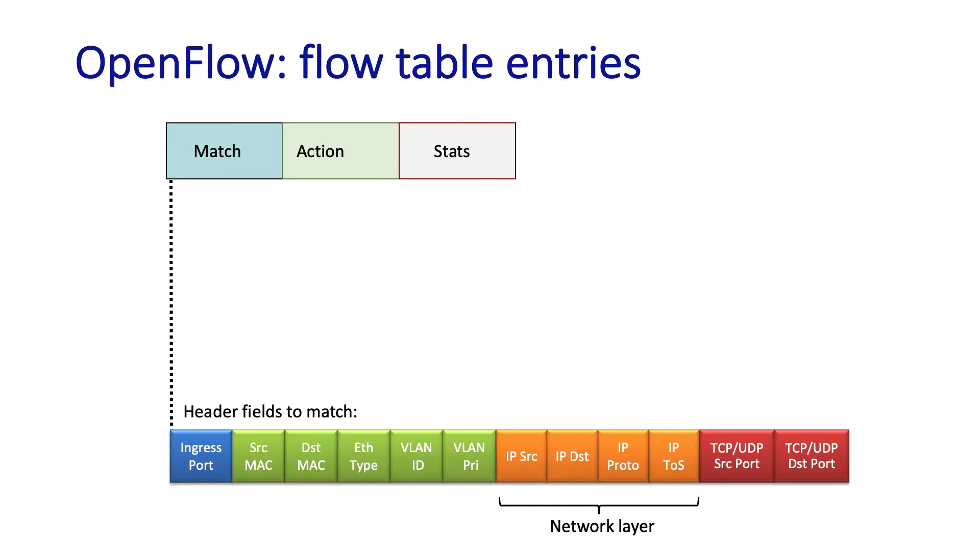In addition to these network layer header fields, one can also match on transport layer port source and destination numbers. So, for instance, one could block or specifically allow services at well-known port numbers. And matching can also be done at the link layer as well. We've not yet studied the link layer, but we will soon. So that's the matching.